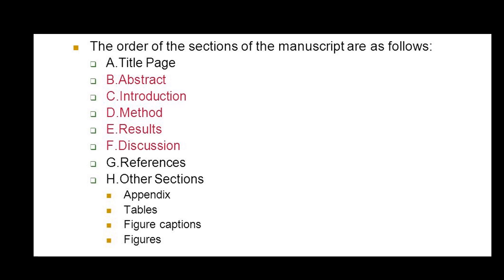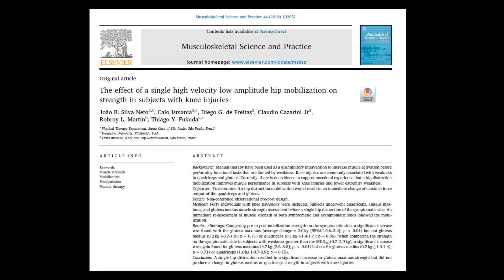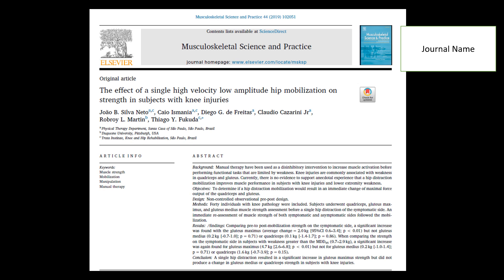The appendix may also include scales or different strategies the researcher used and wants to share with the community. Whenever you look at a paper, I encourage you to download one and go through it to identify its components — this is the first and foremost step in reading a research paper. Let's look at an example to make things clearer. This is a paper I was reading recently: 'The Effect of a Single High Velocity Low Amplitude Hip Mobilization on Strength in Subjects with Injuries,' published in Musculoskeletal Science and Practice. The first thing to look for is the journal name.